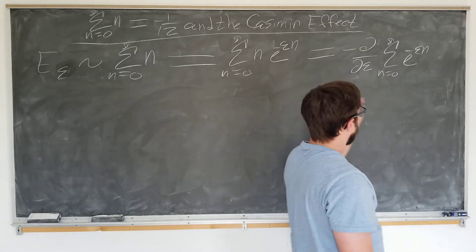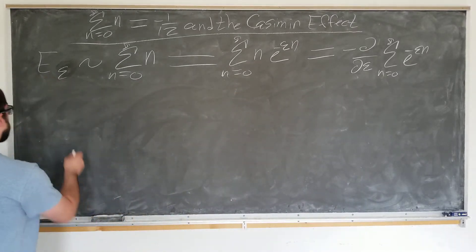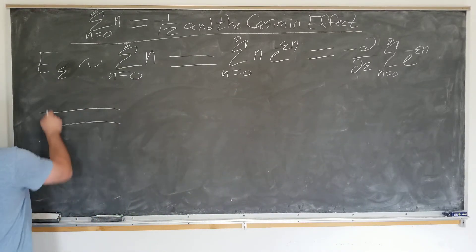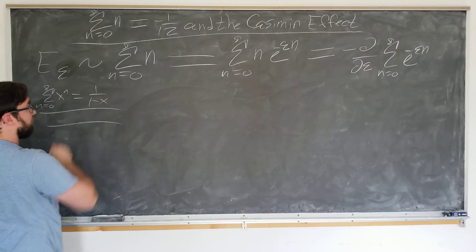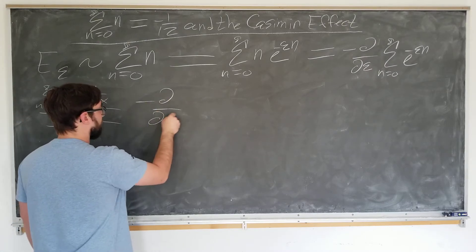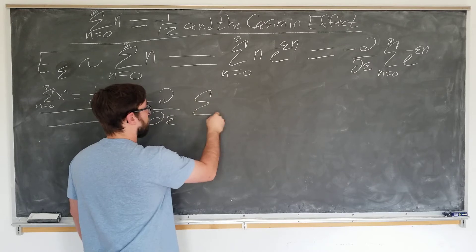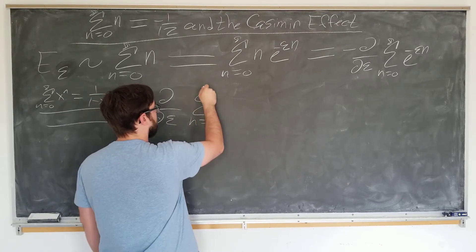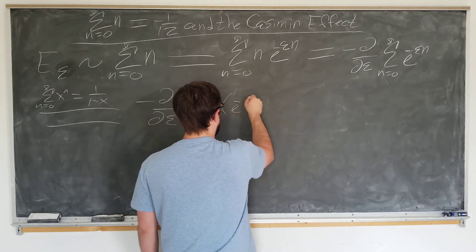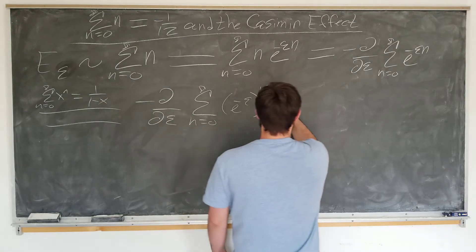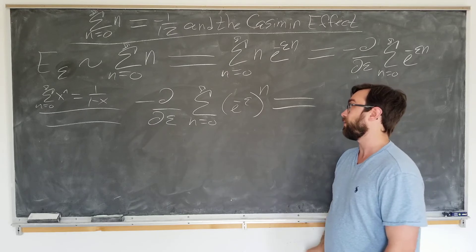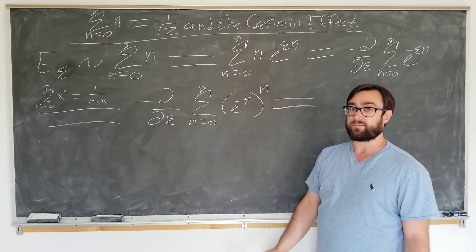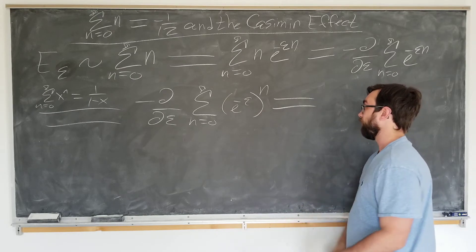Notice, we can also write this as a geometric series. So, we're going to be using the formula, geometric series from high school, to rewrite this as minus epsilon derivative of sum n equals zero to infinity, e to the minus epsilon to the n. Now, about the convergence, we're not going to really worry about that here, but just note that e to the minus epsilon is going to be small, so we at least have a shot of this converging.